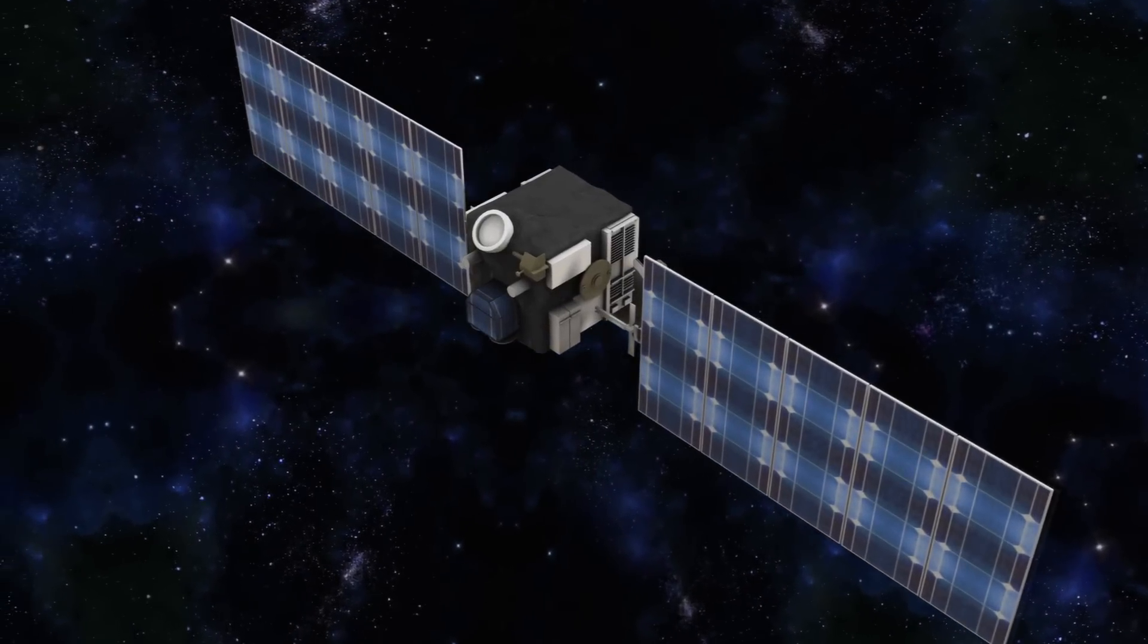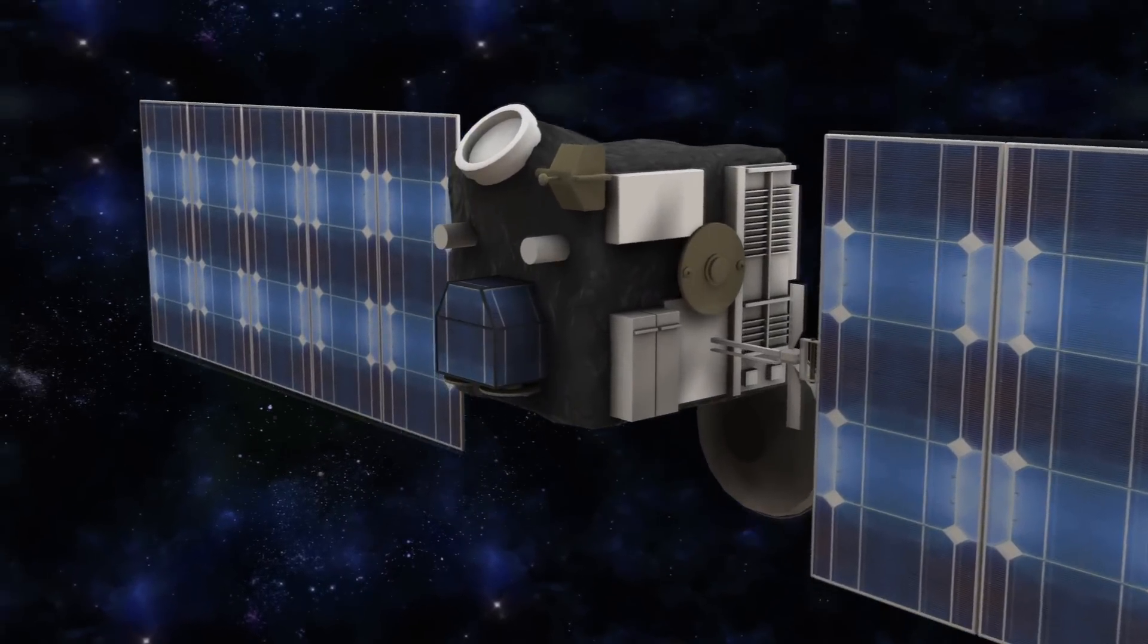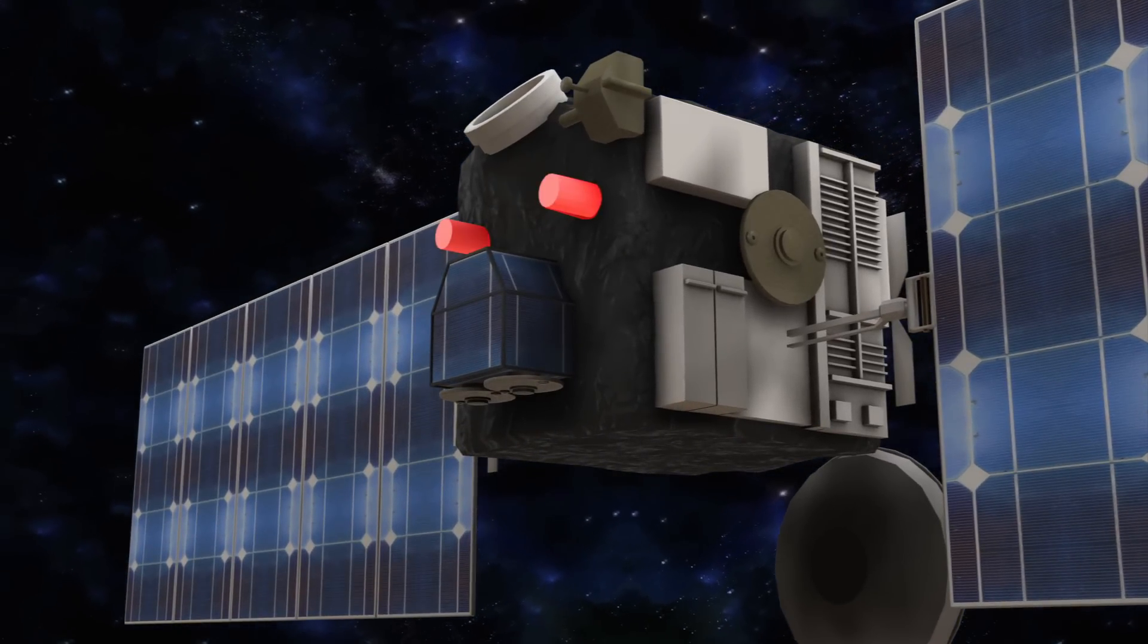Rosetta, which is powered by solar energy, was put into power saving mode in 2011 as it was too far away from the Sun. It has stopped all communications with Earth.